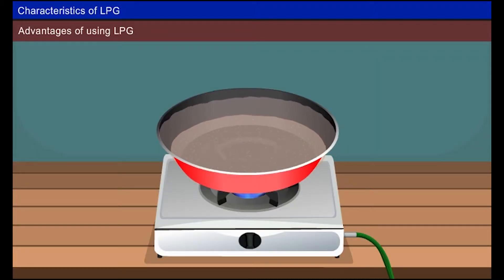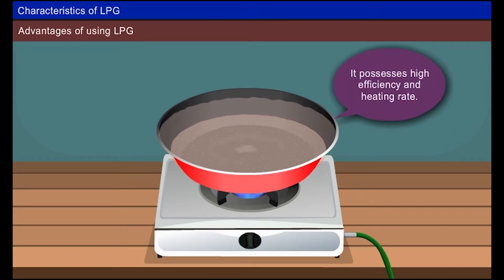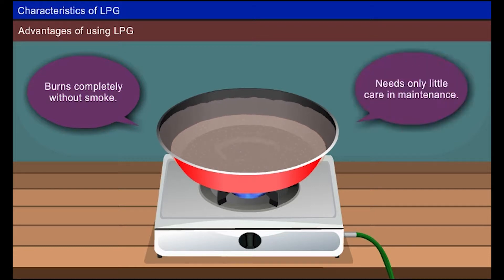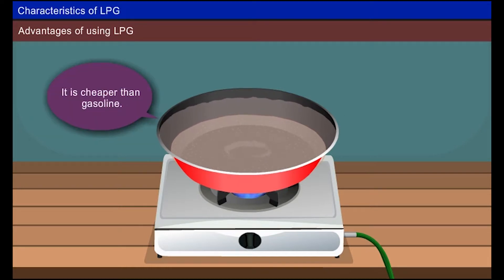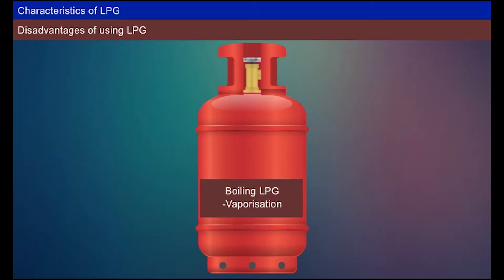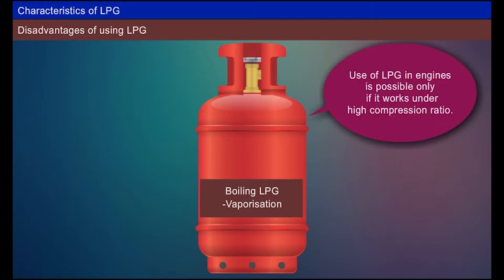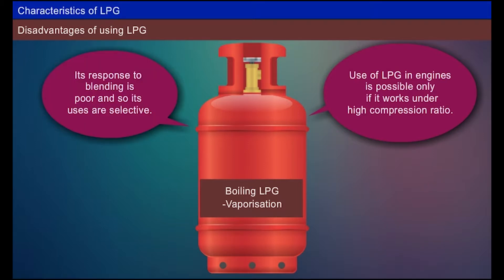Advantages of using LPG: it possesses high efficiency and heating rate, burns completely without smoke, needs only little care in maintenance, is easily transported using a steel cylinder to any place, and it is cheaper than gasoline. Disadvantages of using LPG: handling is possible only under pressure, use of LPG in engines is possible only if it works under high compression ratio, and its response to blending is poor so its uses are selective.